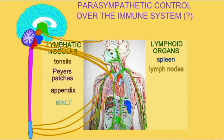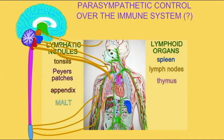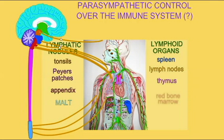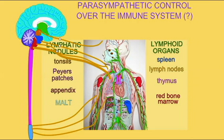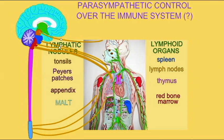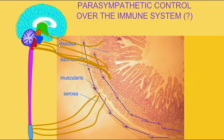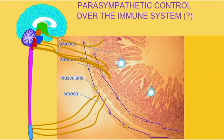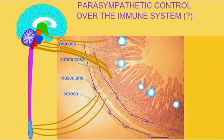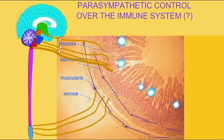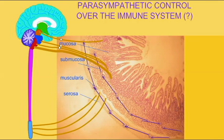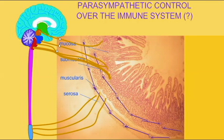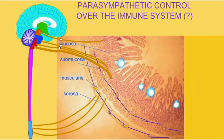Therefore, the parasympathetic division may have an effect on immunity by influencing the sympathetic direct control over immunity. Also, it is possible that parasympathetic stimulation of other areas, such as the gut, may result in hormones being produced, such as cholecystokinin, which then travels through the blood and may have effects on other tissues.